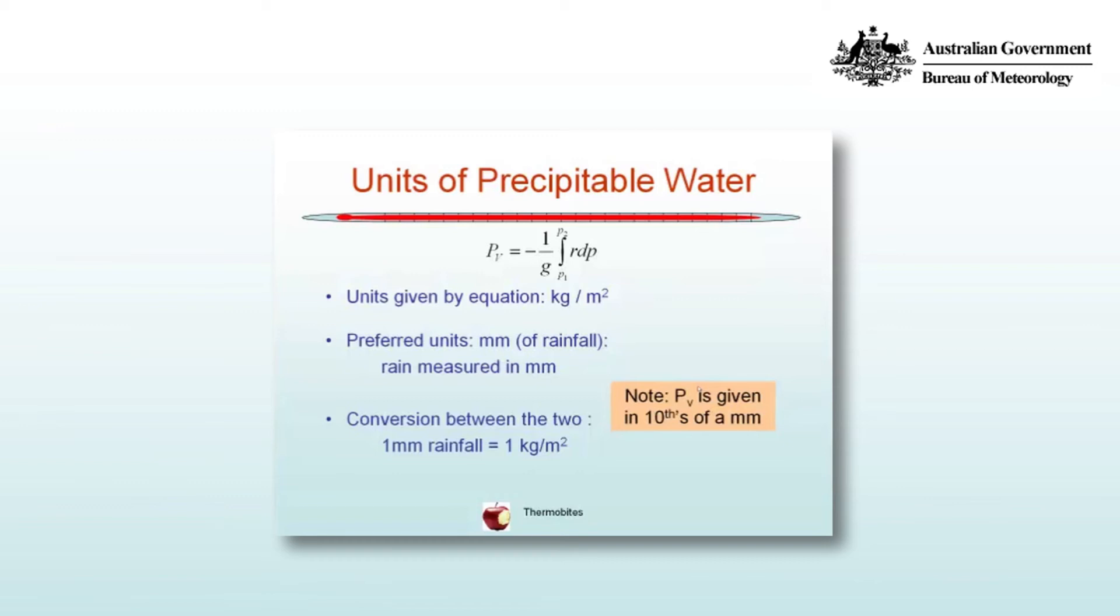The units are given by the equation as kg per metre squared, but the preferred units of rainfall are millimetres. Rain is measured in millimetres. And the conversion between the two is that 1 millimetre of rainfall is equal to 1 kg per metre squared. But note, typically we're given the value of precipitable water in tenths of a millimetre.